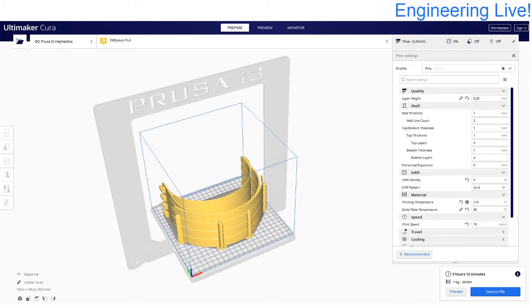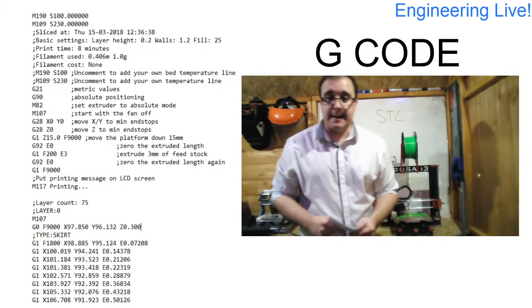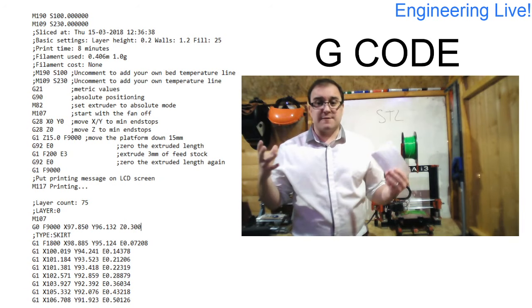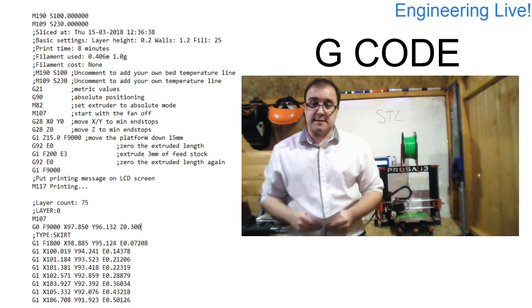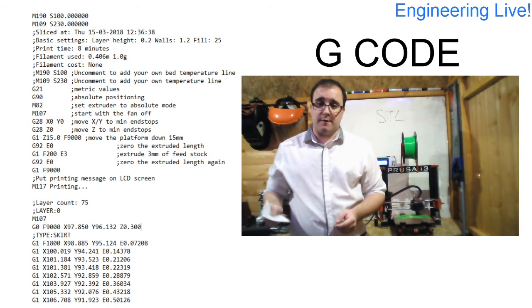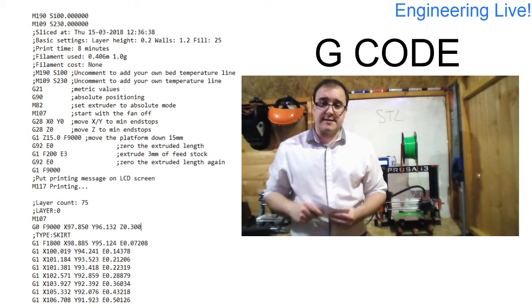If we were to click that blue button in the bottom right hand corner that says save to file we can then create our program. But because our program no longer just has coordinates in there it's got our temperatures we call that program the g-code. And if we have a look here this is what our g-code looks like. So it's a long list of different commands that can be sent to the 3D printer. And if we look down towards the bottom part of the page down here you can see we're starting to get our long list of coordinates.